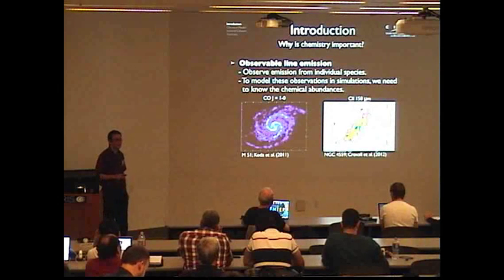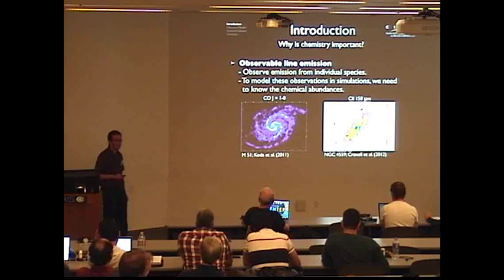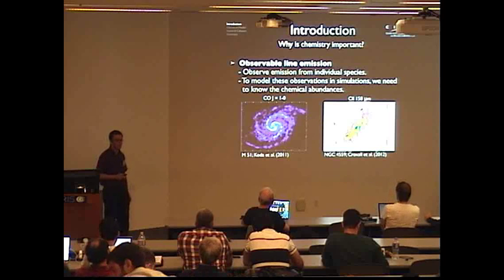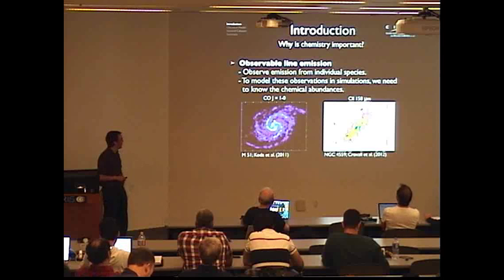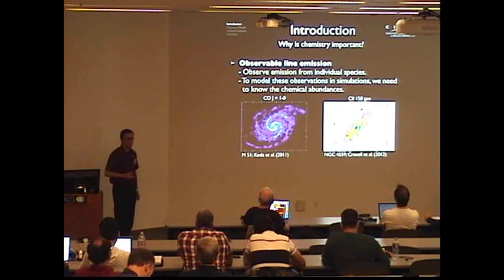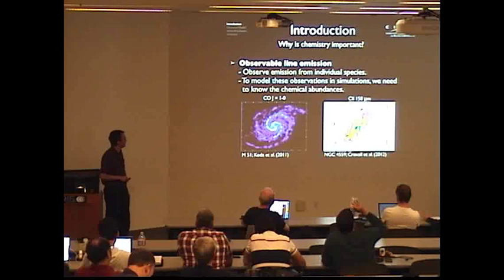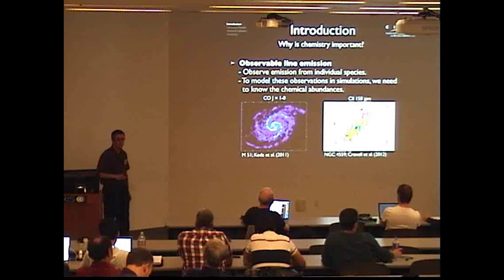The second reason we're interested in chemistry is if we want to model the observable line emission from individual chemical species. I show here two examples of observations we might want to model from simulations. On the left is line emission from the CO molecule from the Whirlpool Galaxy, often used as a tracer of molecular gas. On the right is an image of line emission from the C+ ion. So if we want to model these kinds of observations we need to understand the chemistry of the gas.